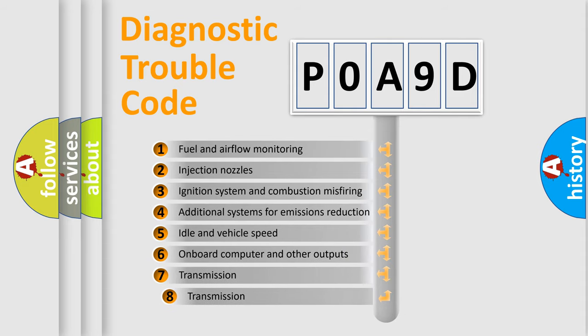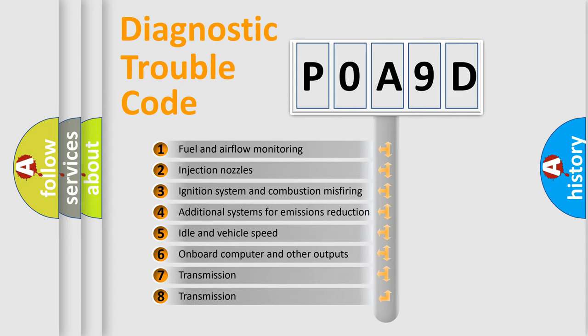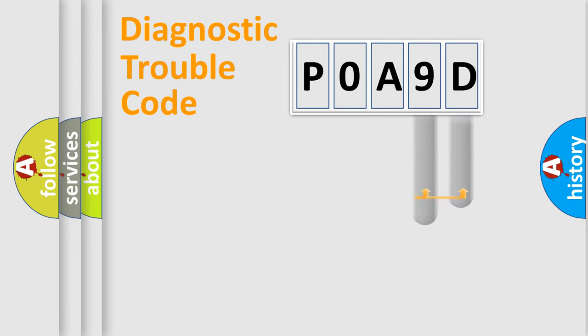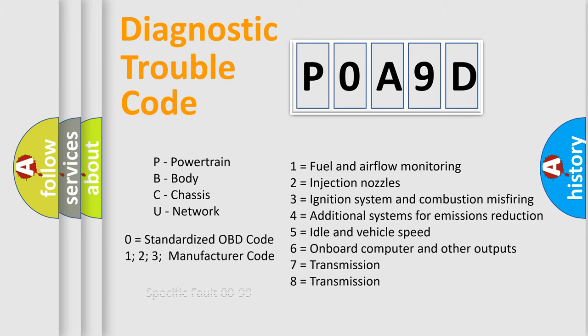The third character specifies a subset of errors. The distribution shown is valid only for the standardized DTC code. Only the last two characters define the specific fault of the group. Let's not forget that such a division is valid only if the other character code is expressed by the number zero.